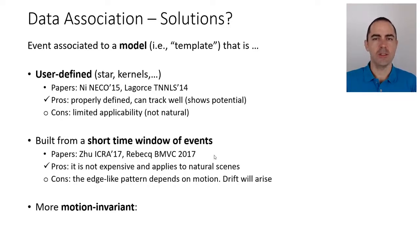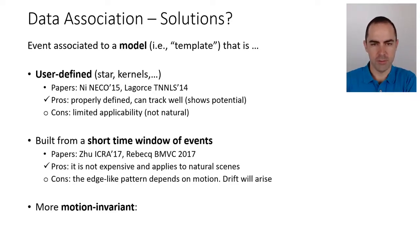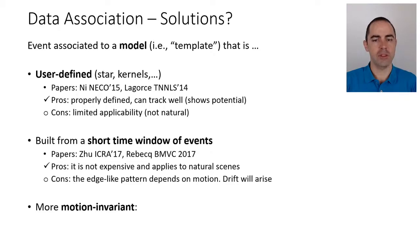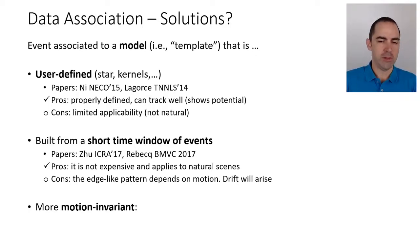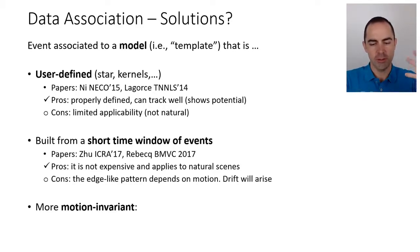The advantages of motion-compensated event features are that they are not expensive and apply to natural scenes. The disadvantage is that because templates are built from events, and events depend on motion, there is eventually some drift — it won't be possible to match horizontal edges to vertical edges in the extreme case.